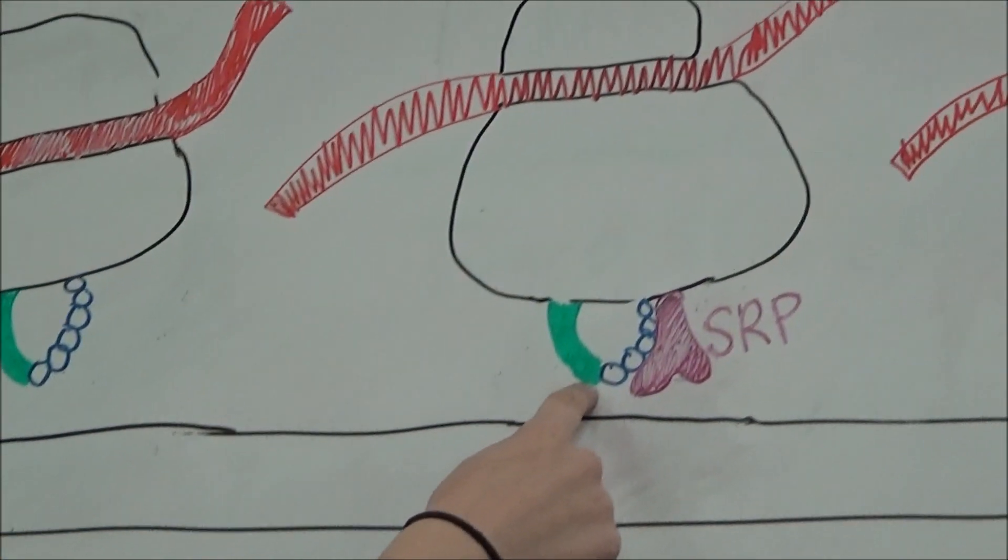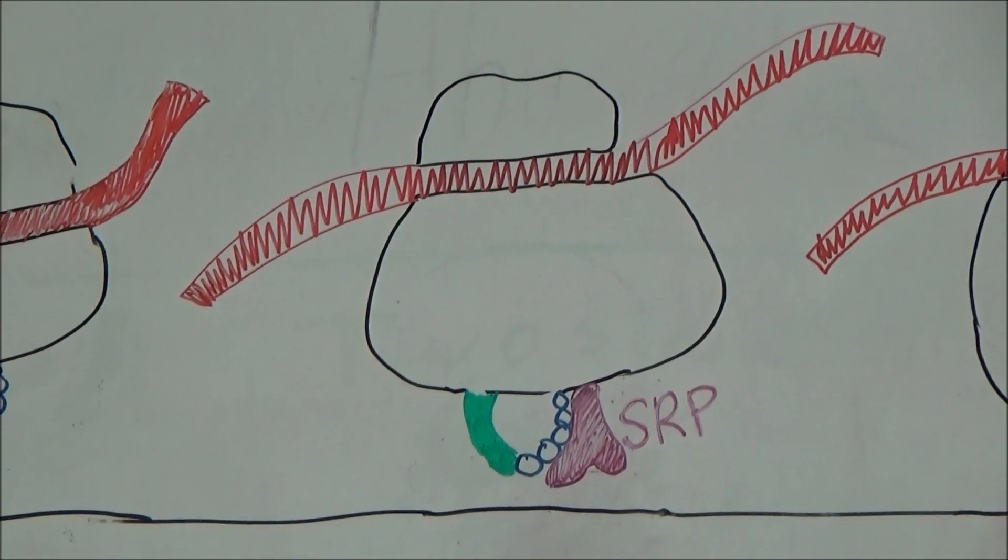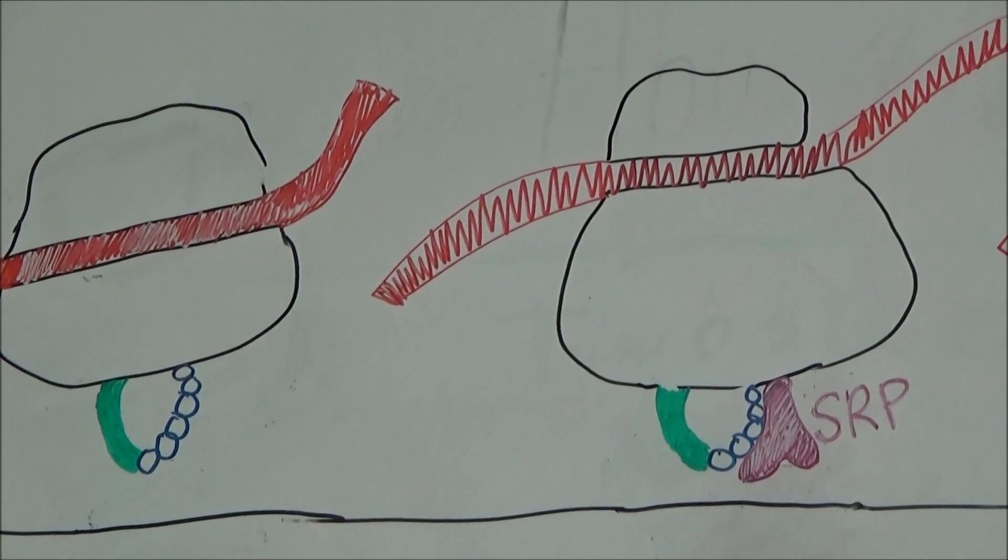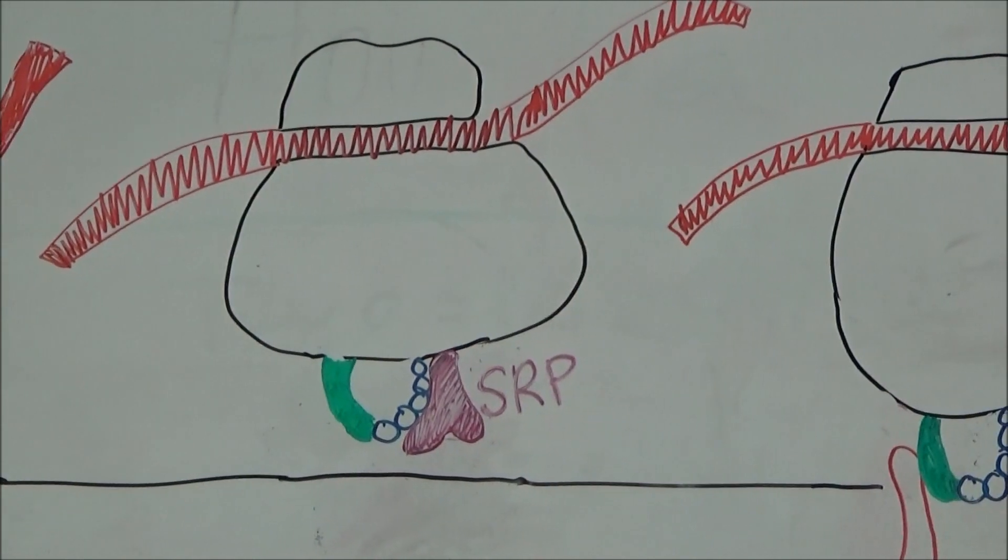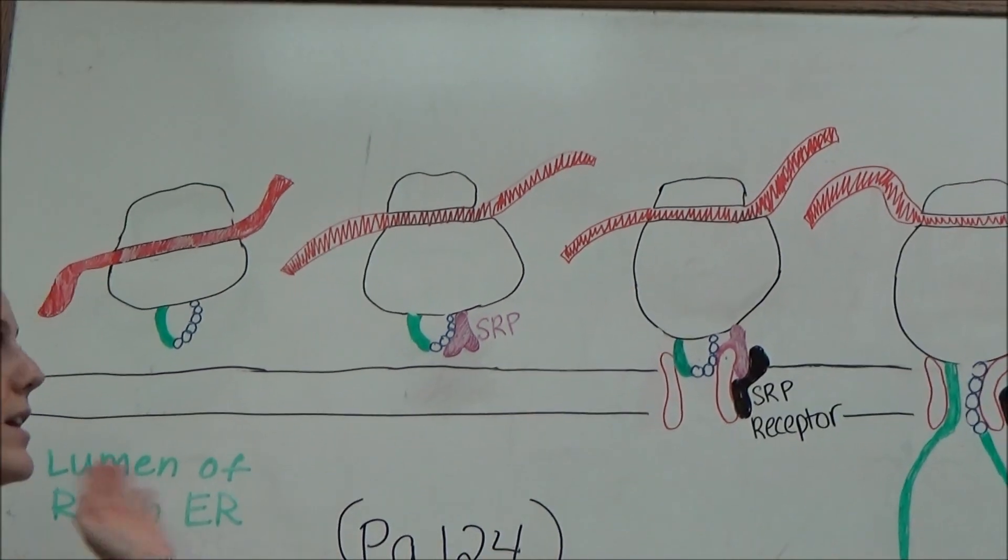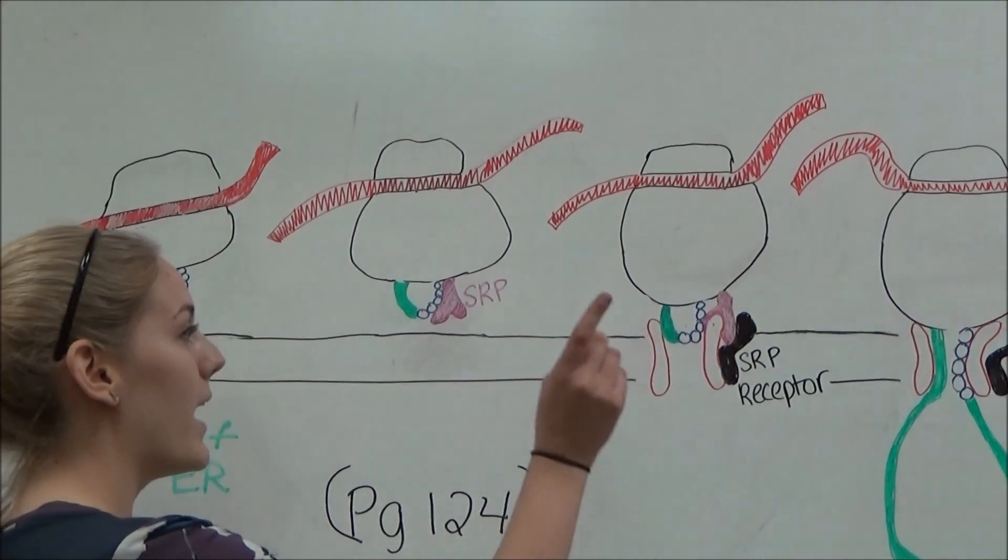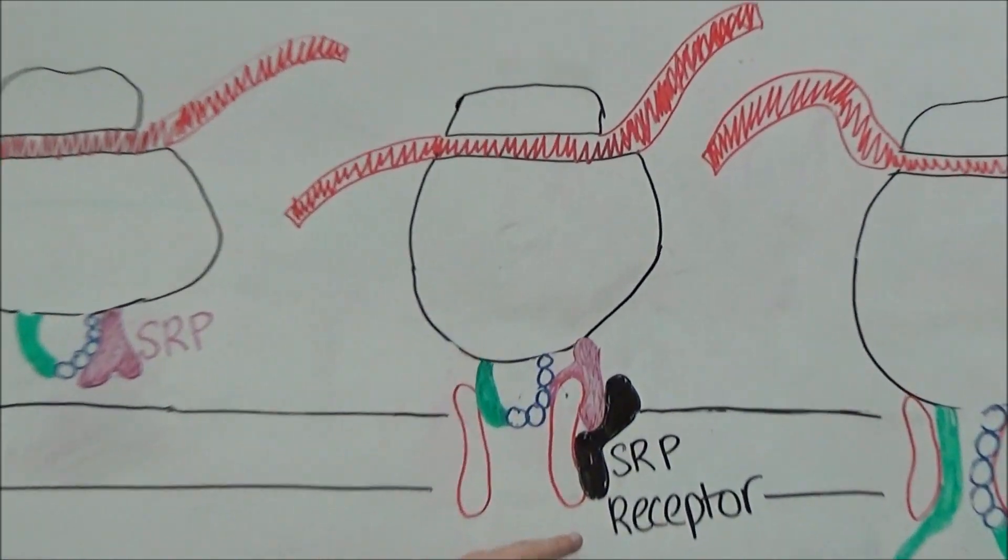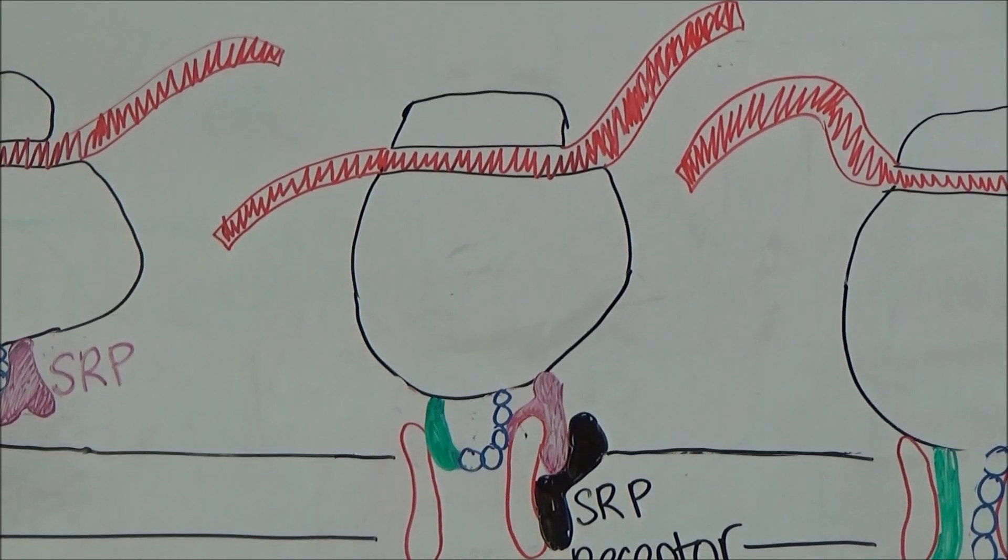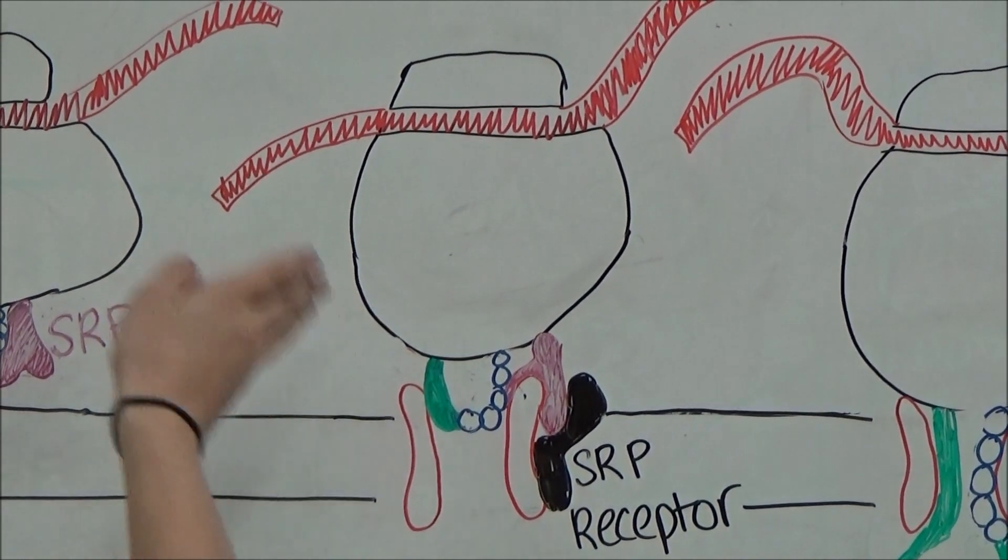Here you can see that these first couple of polypeptides are able to bind to the SRP particle, which is the signal recognition particle. Through the signal recognition particle, it is able to bind to the SRP receptor. Because it binds to the SRP receptor, you can see it's binding here to the lumen of the rough ER.